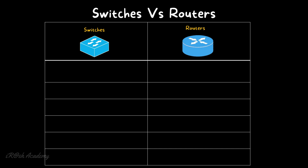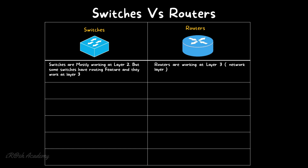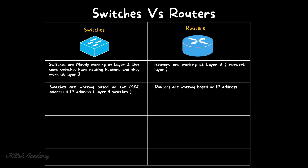Now let's discuss the differences between switches and routers. Switches mostly work at Layer 2, though some have routing features and work at Layer 3. Routers always work at Layer 3. Layer 2 switches work at the data link layer based on MAC addresses; Layer 3 switches work at the network layer using both MAC and IP addresses. Routers work only based on IP addresses at the network layer and do not use MAC addresses.